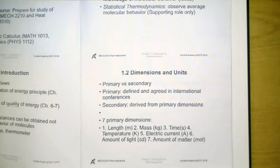There are seven primary dimensions including with the corresponding SI units: length in meter, mass in kilogram, time in second, temperature in Kelvin, electric current in ampere, amount of light in candela, as well as amount of matter in mole.